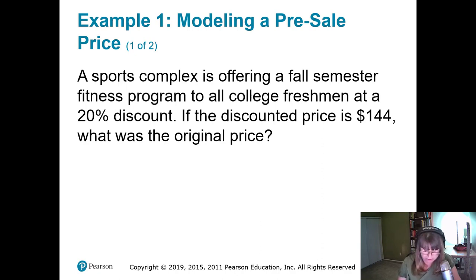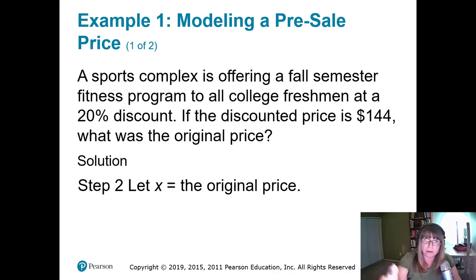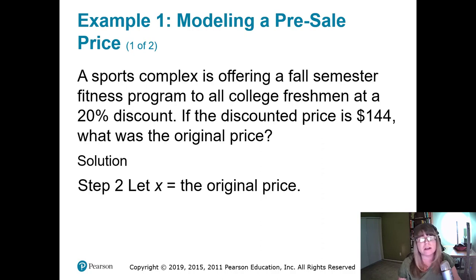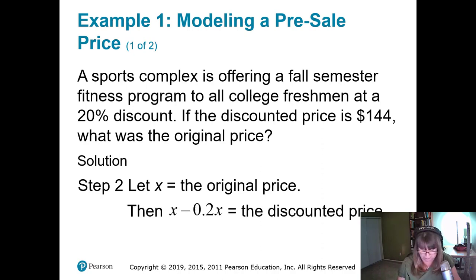The first step is to read the problem. The second step is to figure out what x is — what are we looking for? Our unknown is the original price, so let's use x. You could use p or o for original price, but I like x because it looks like an unknown. Next, x minus 20% of x gives the discounted price.